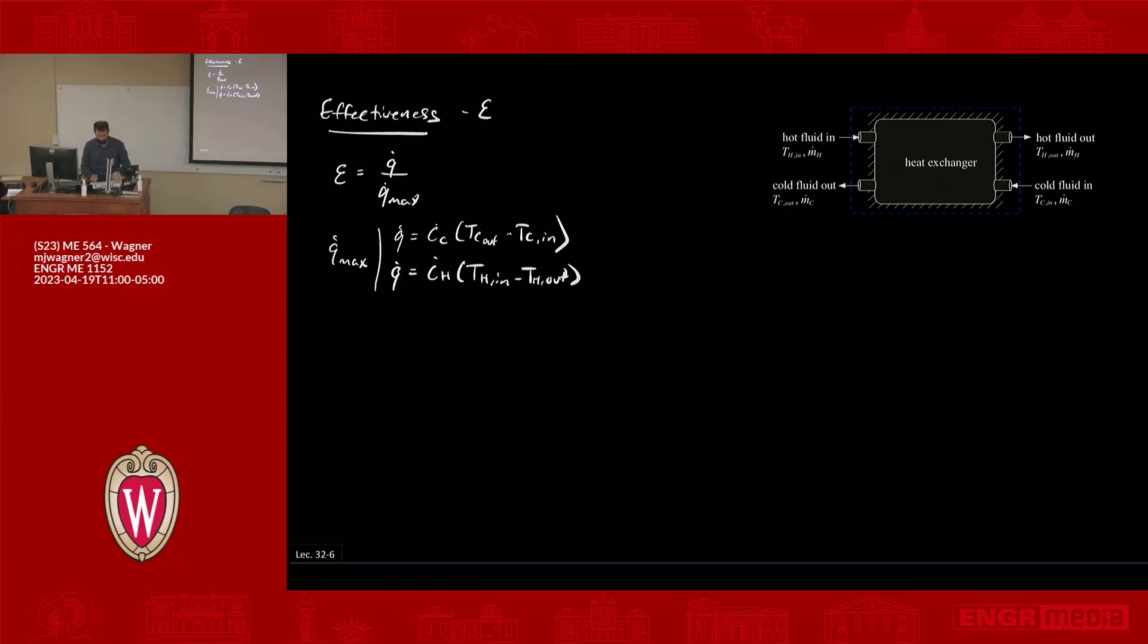So the one with the lower capacitance rate is going to be the one that would achieve that temperature difference first. So we compare these two, we look at which has the lower capacitance rate, and then calculate the maximum for each flow, and then take the minimum of that, and that gives you your maximum heat transfer. So let me write that out. So here, this would become Q max for the cold flow equals C C times T H in minus T C in.